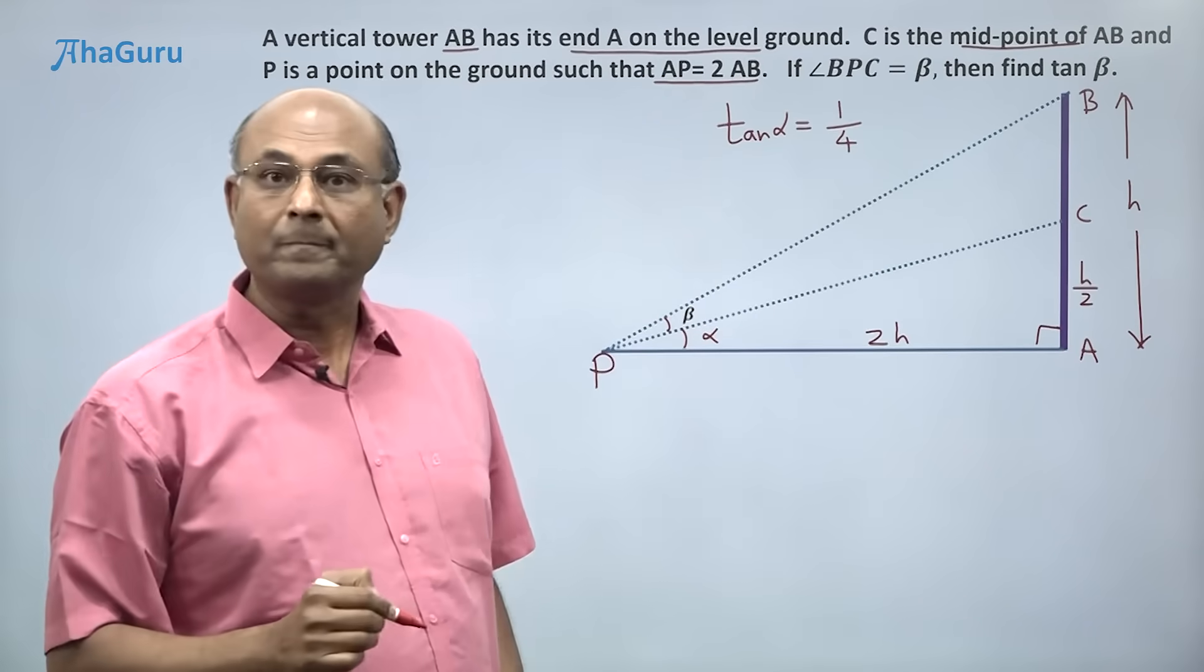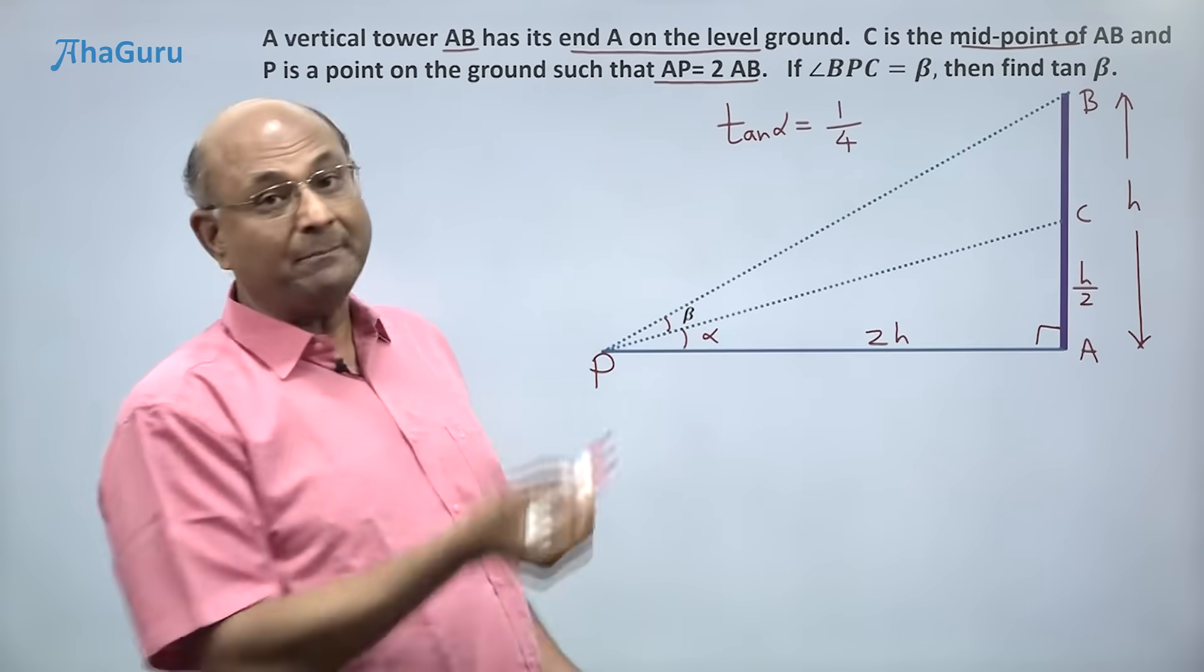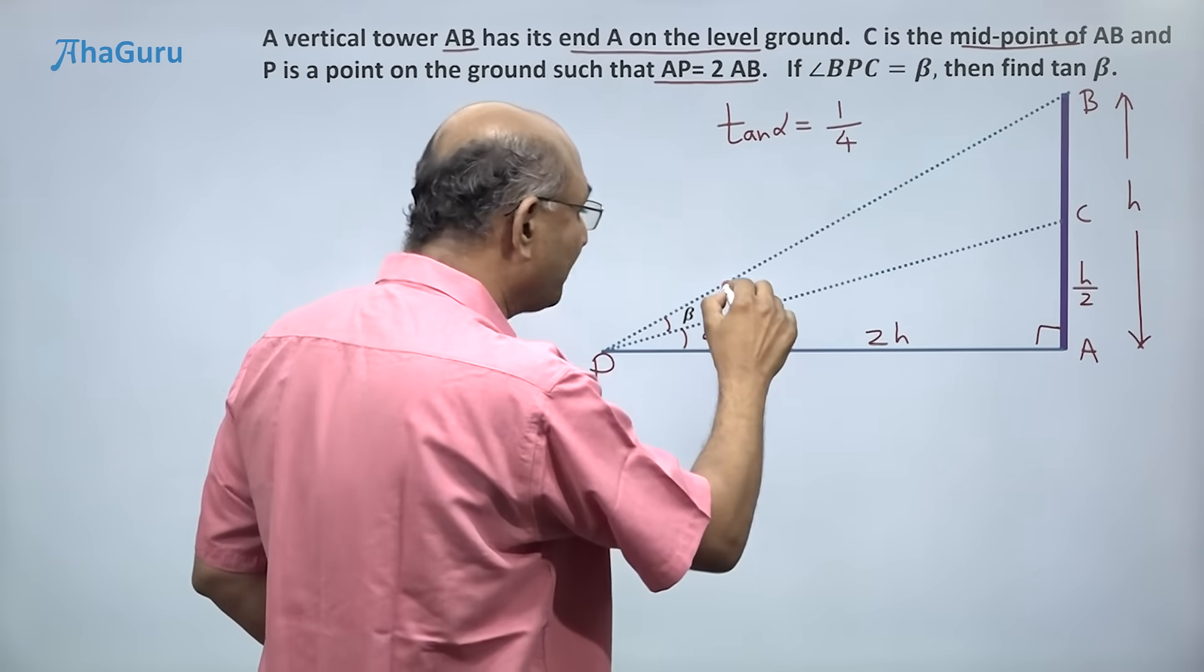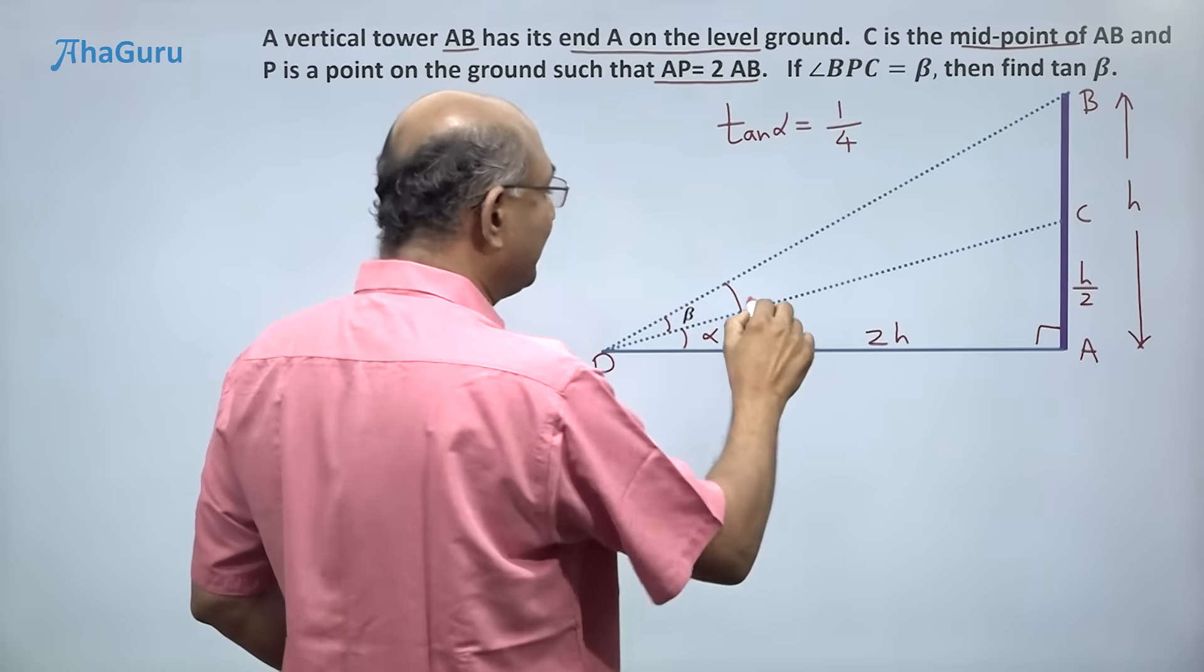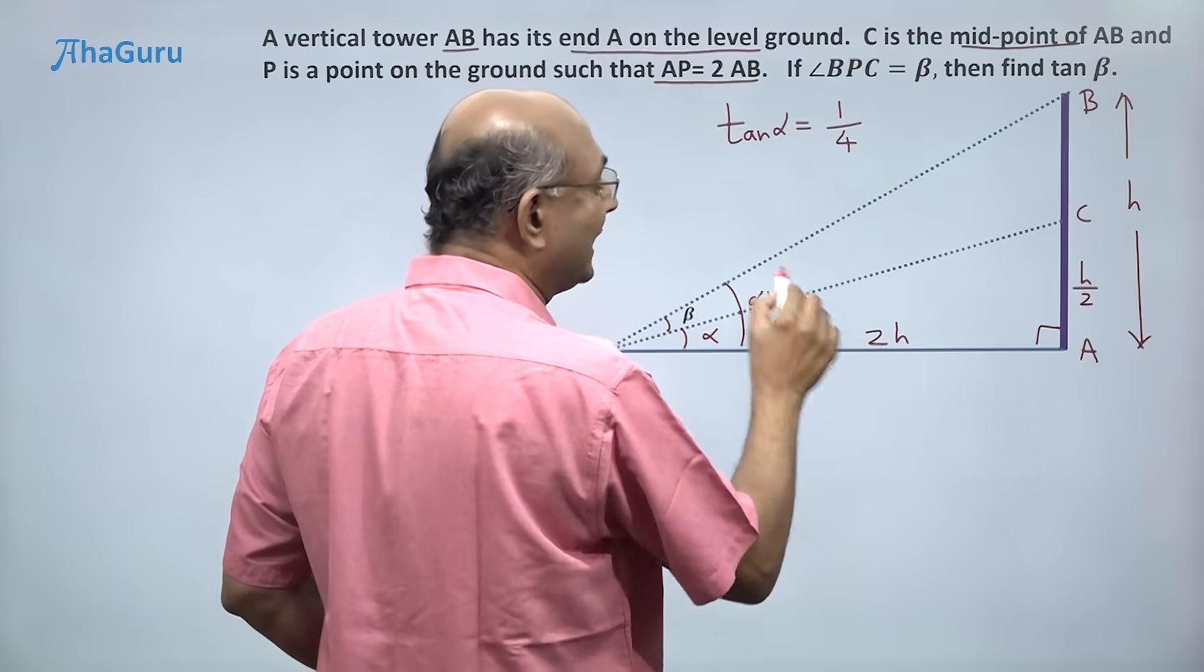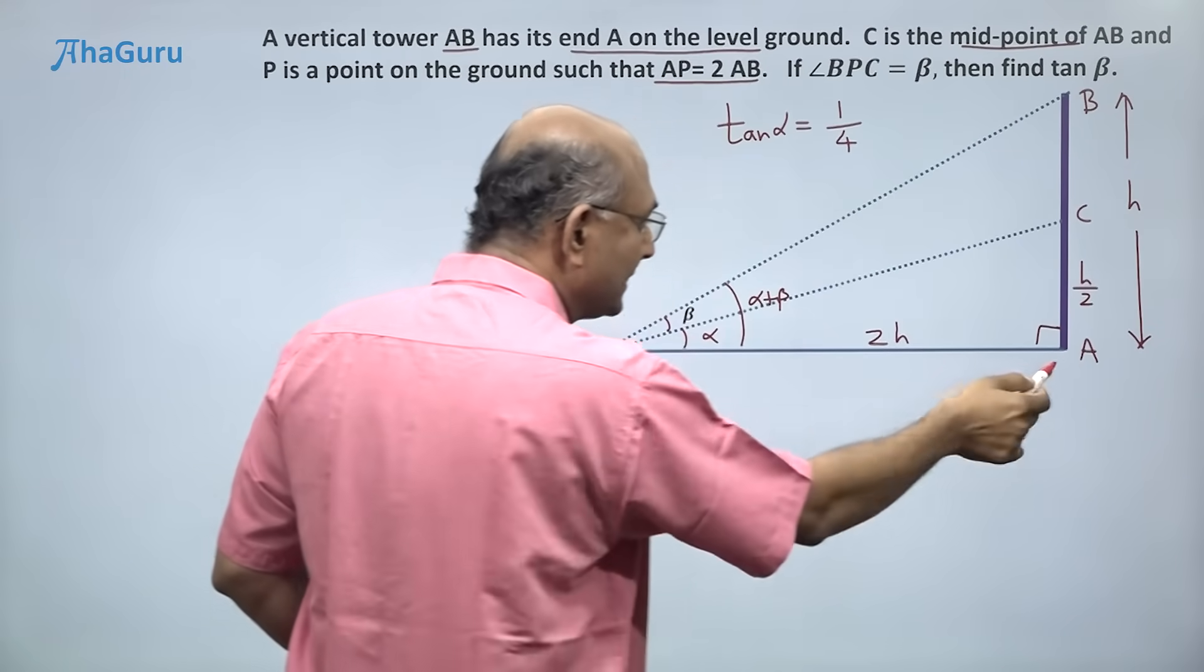Now I can't still find tan beta, but I can find tan(alpha + beta). Because if I look at alpha plus beta, this side is h, this is 2h.